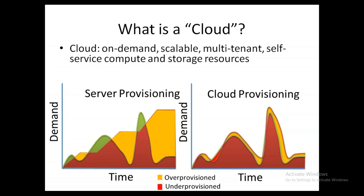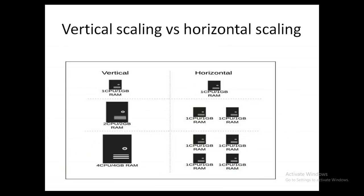When we talk about hardware and software scaling, it depends on two types: vertical and horizontal scaling. Vertical scaling means upgrading your system — for example, going from 100 GB hard disk and 2 GB RAM up to 1 TB or 4 GB, 10-12 GB of RAM. It's about improving or adding hardware: extending RAM, processor speed, and hard disk space.